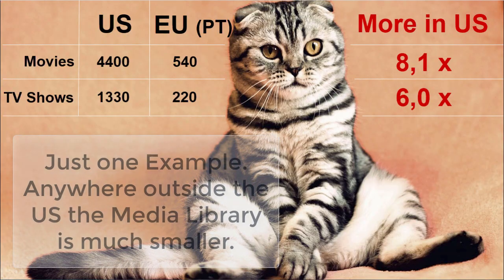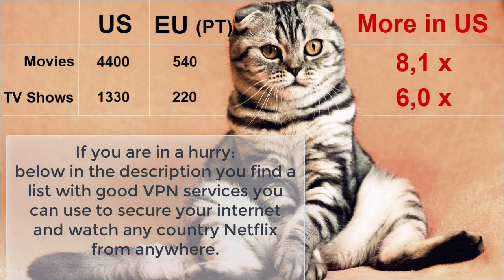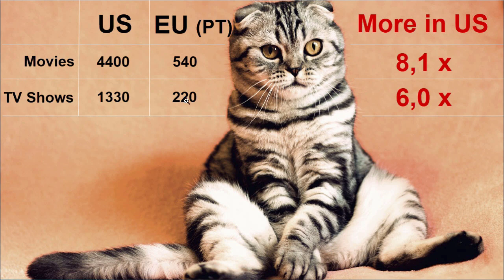If you're in Portugal, for example — Lisbon is a very popular place for expats — no matter what Netflix account you have, if you have a US Netflix account and you go to Portugal, you only have 540 movies on offer and probably some of them are Portuguese. In the US you have 4,400. And TV shows in Portugal you have 220, and in the US you have 1,330. And of course some of those 220 will probably be Portuguese TV shows.